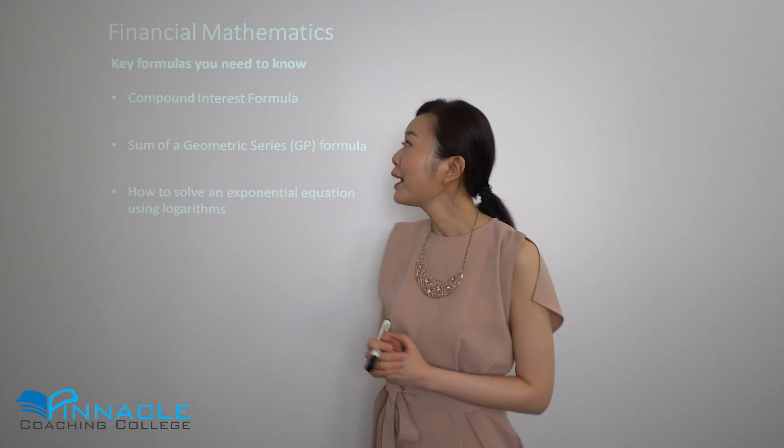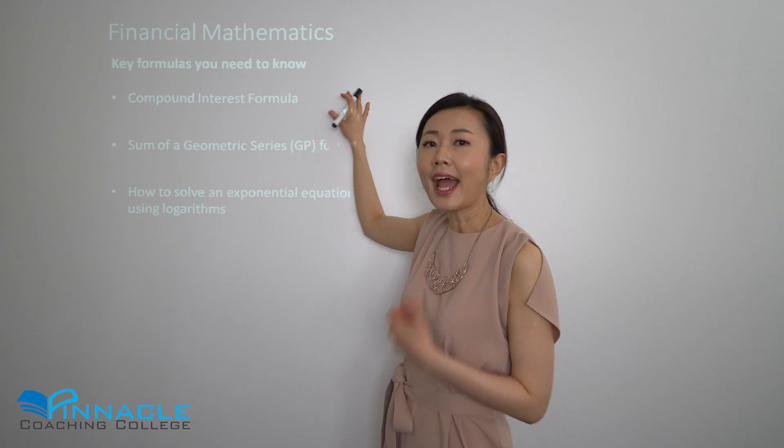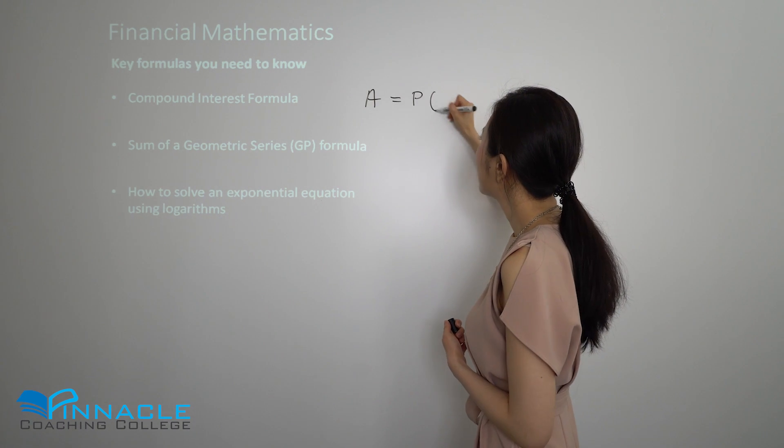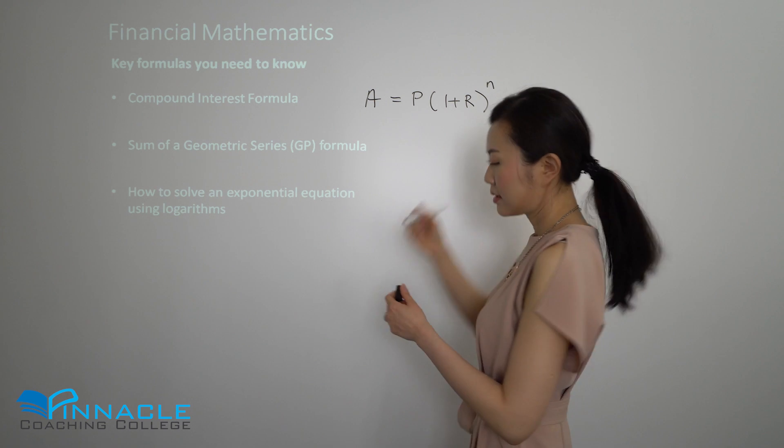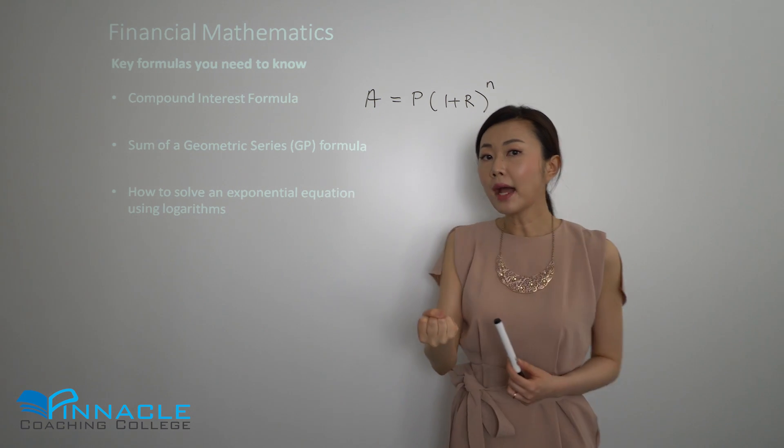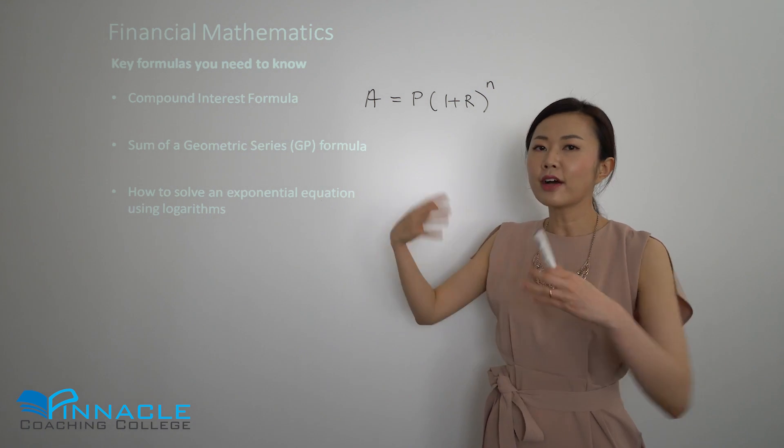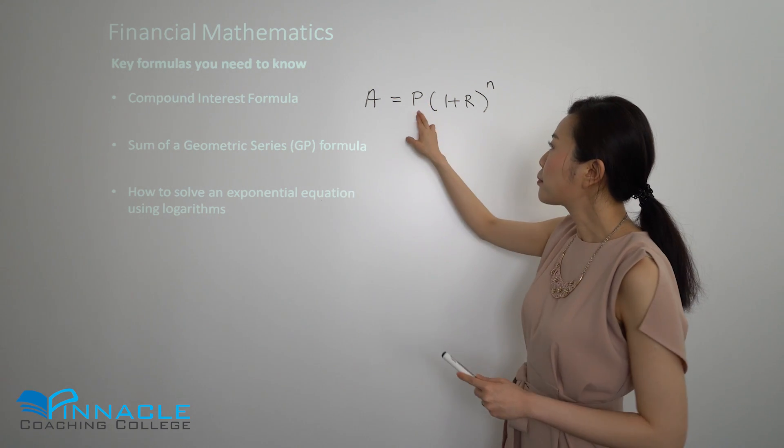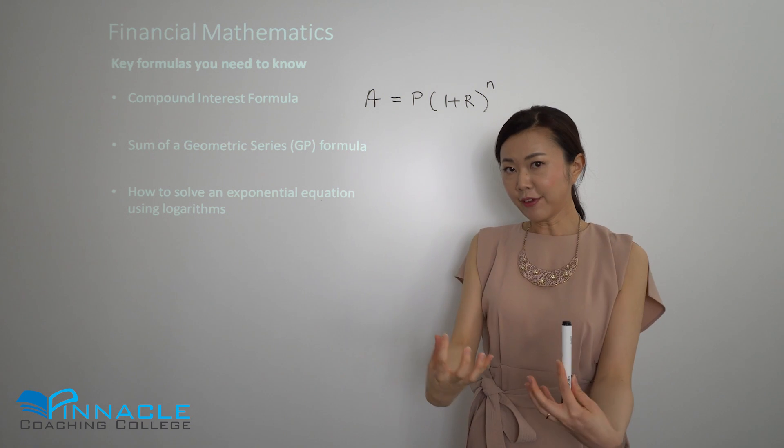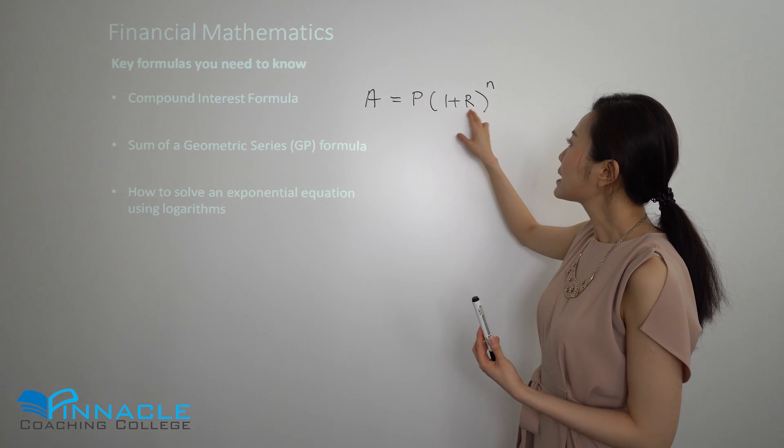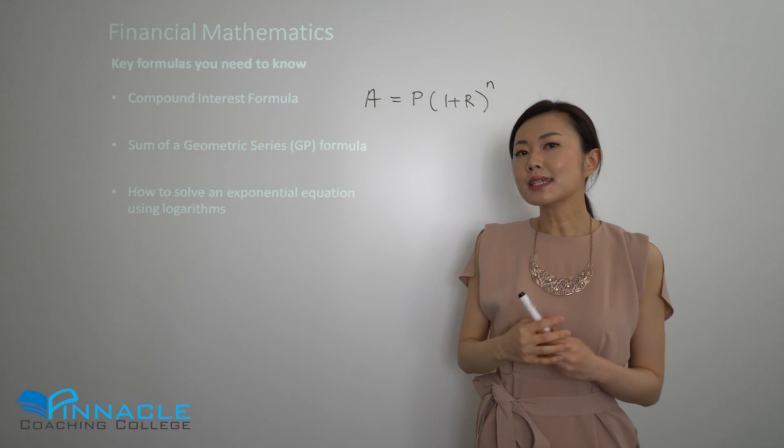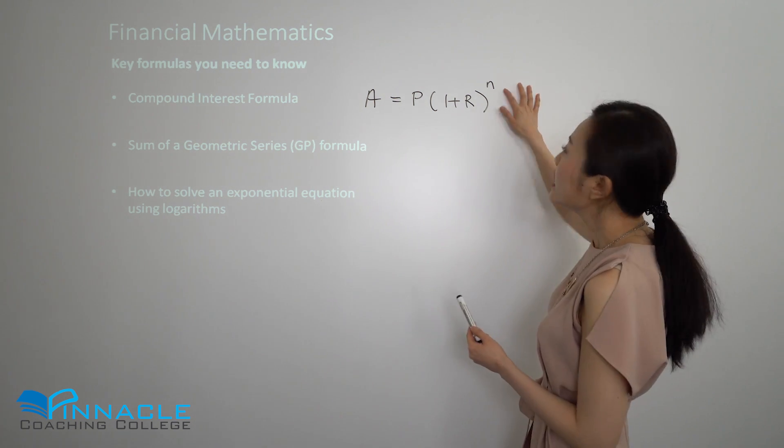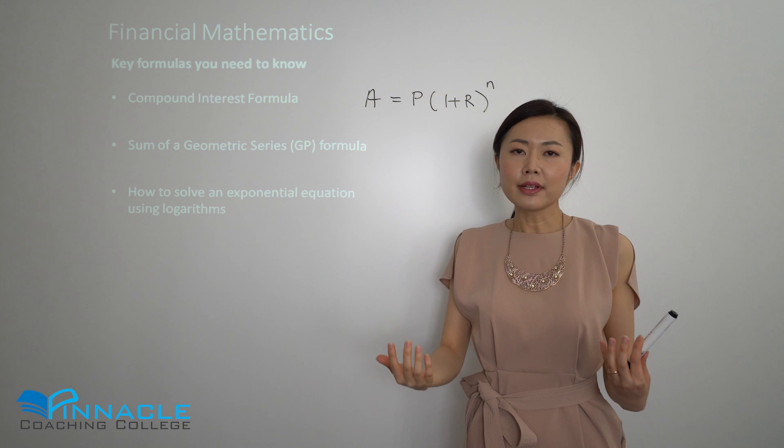So firstly, the compound interest formula - how do you calculate compound interest? It's basically this formula here. A represents the amount at the end of a number of periods. It includes principal and interest. P is the principal, the amount you've invested or borrowed. One plus the interest rate - usually interest rate is a per annum rate, you might need to change it to a monthly rate if it's compounded monthly. And n is the number of time periods, which could be the number of years or months.